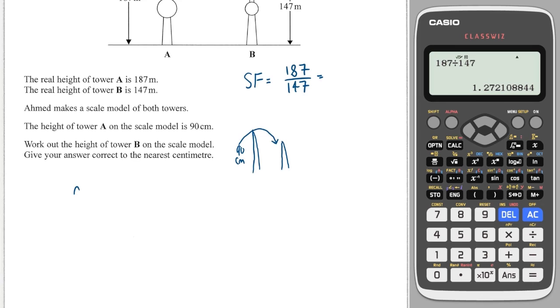So the calculation I need to do is 90 divided by our scale factor. So I go to my calculator and I do 90 divided by 187 over 147. That does not give me a nice number, but it does say it's the nearest centimeter, so that makes me feel like I've got it right. That is 70.7, so to the nearest centimeter, that is approximately 71 centimeters.